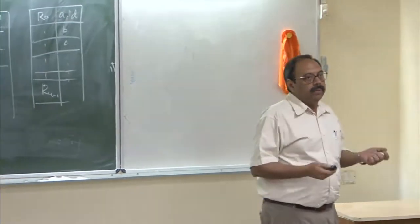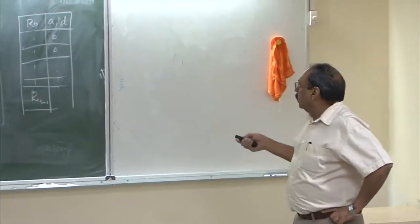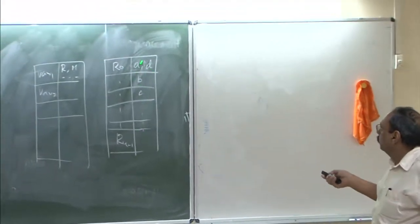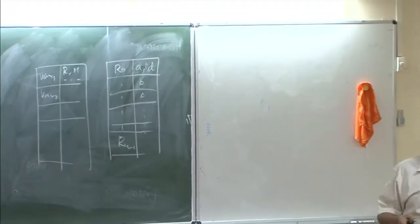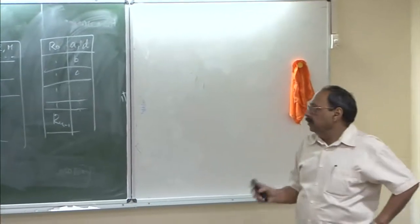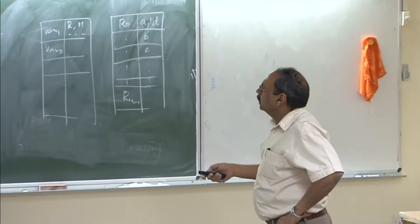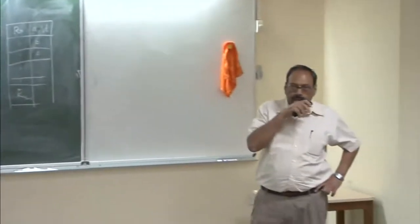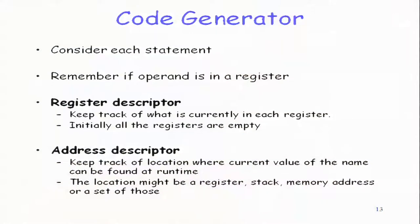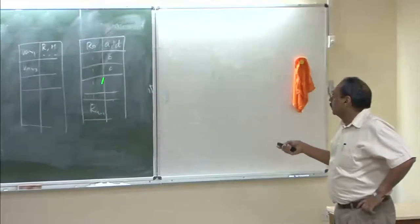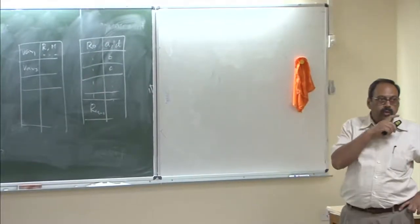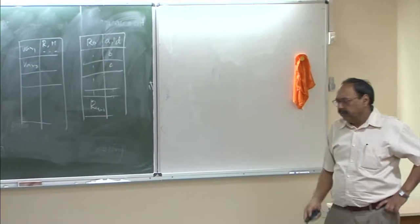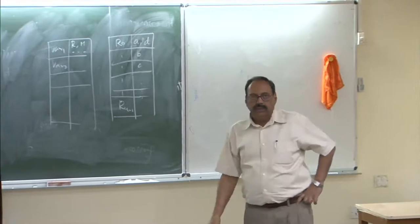A variable may be simultaneously available in more than one location, and a register may simultaneously hold the value of more than one variable. These are the two descriptors we create at the start of code generation. Initially, all variables will be in memory and not in any register. Each register starts as empty, and we load values into registers as we go through the basic block.